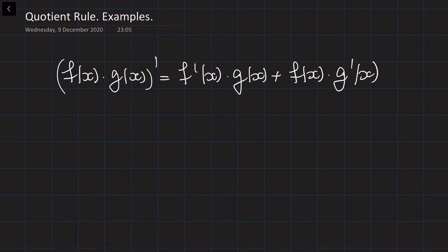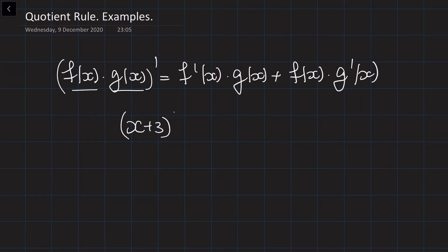In our previous video lectures, we discussed how to find the derivative of the product of two functions, and it can be expanded using a formula. It helped us figure out, for example, the derivative of (x+3)² or (x+3)³ times (x+5)⁵, or the multiplication of an exponential function into a polynomial, or the multiplication of an exponential function into a trigonometric function.